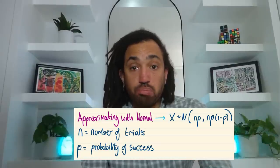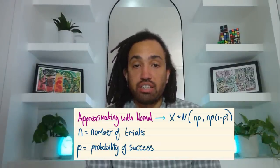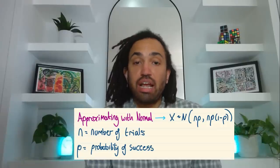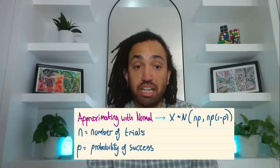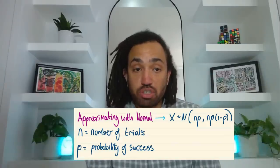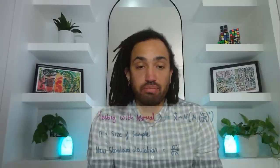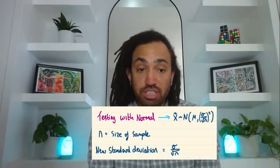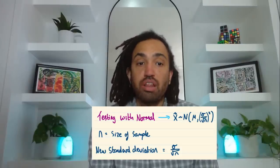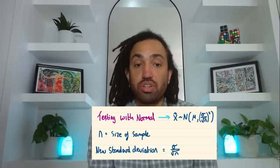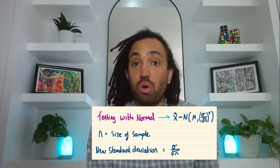Next up we have approximating with the normal and the distribution is that N open brackets the mean is NP and the variance is NP(1 minus P) where because we're approximating a binomial distribution N is number of trials and P is the probability of success again. And then finally when we're doing a hypothesis test with a normal we've already spoken about this but it's so important that N is the sample size so the new standard deviation is the old standard deviation divided by the square root of N.